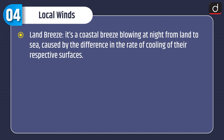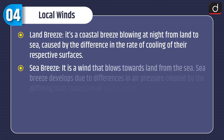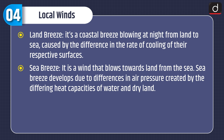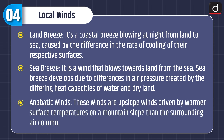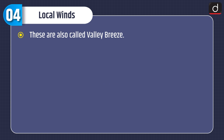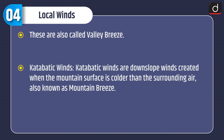Now moving on to local winds. Land breeze is a coastal breeze blowing at night from land to sea, caused by the difference in the rate of cooling of their respective surfaces. Sea breeze is a wind that blows towards land from the sea, developing due to differences in air pressure created by the differing heat capacities of water and dry land. Anabatic winds are upslope winds driven by warmer surface temperatures on a mountain slope than the surrounding air column — also called valley breeze. Katabatic winds are downslope winds created when the mountain surface is colder than the surrounding air, also known as mountain breeze.